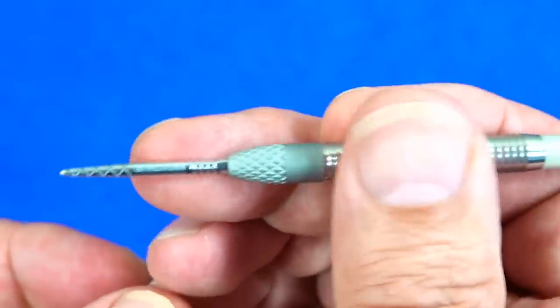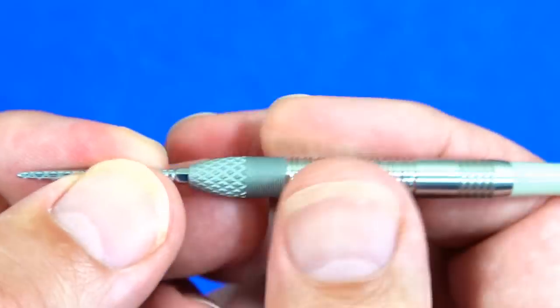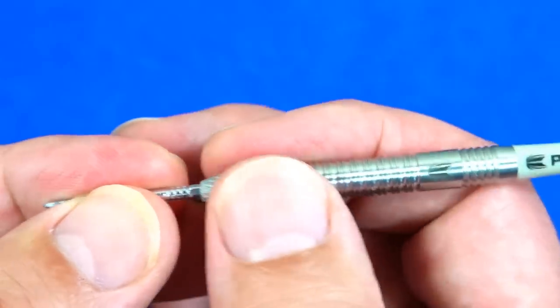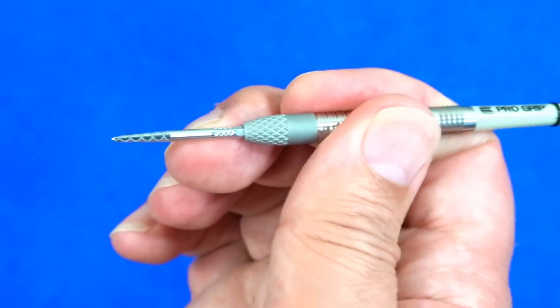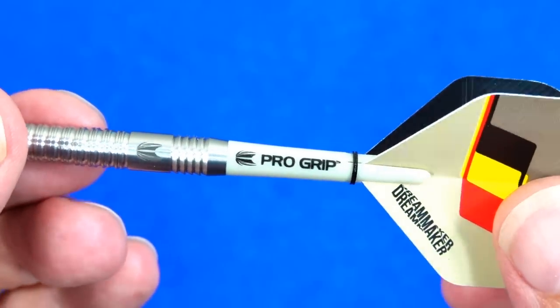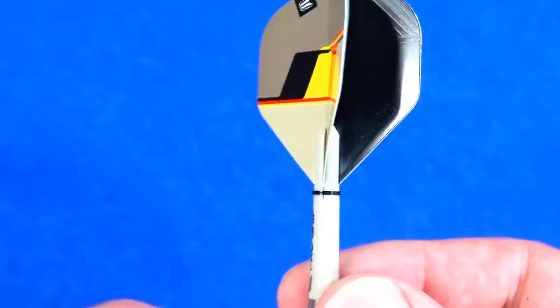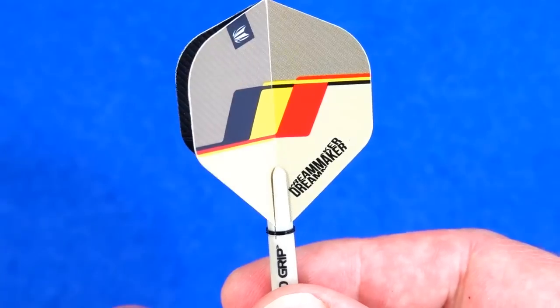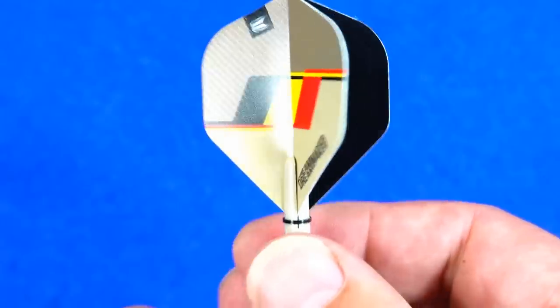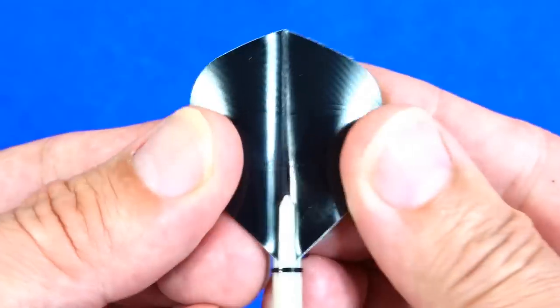We'll have a close look at the grip in the super close-up just now. But it should still appeal to most grips, I think, whether you're front, mid, or rear, but maybe mid-grippers probably get the best of it. And it's got these sand-coloured ProGrip short stems and the new Dimitri Dream Maker Pro Ultra No. 6 small standard flights.